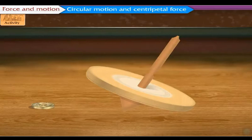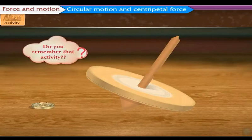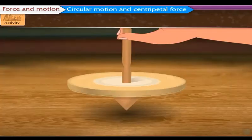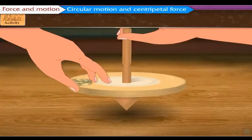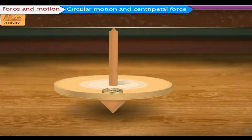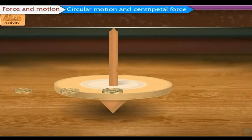We had performed a similar kind of activity in the previous grade. Do you remember that activity? In that activity, a 5 rupee coin was kept on a rotating circular disc. We observed that as the disc moves with high speed, the coin placed at the edge of the disc is thrown off.